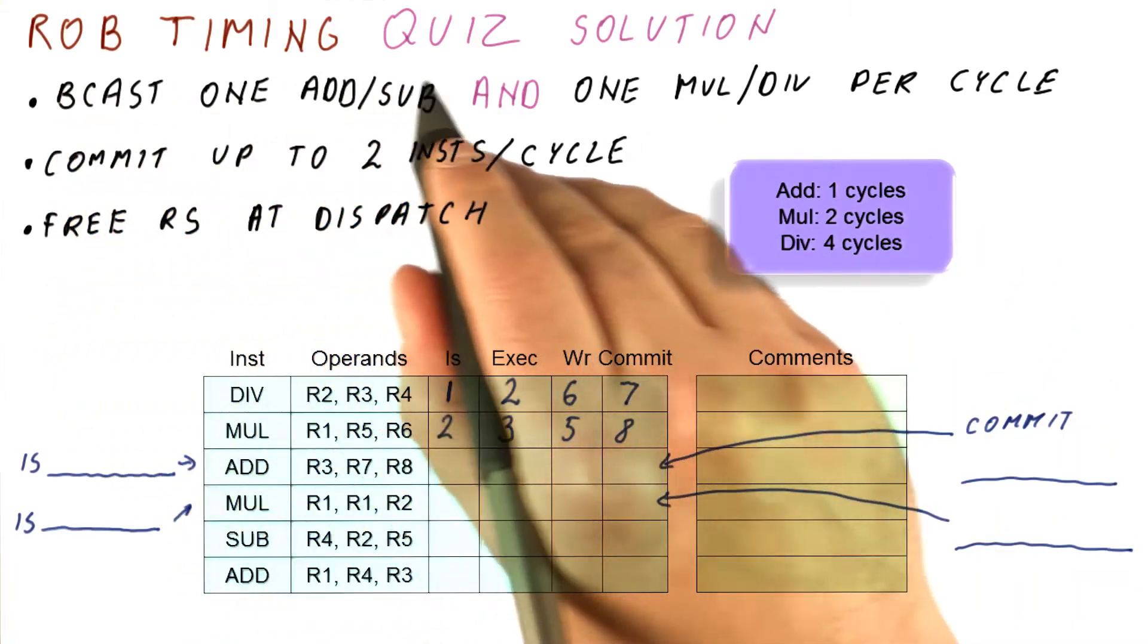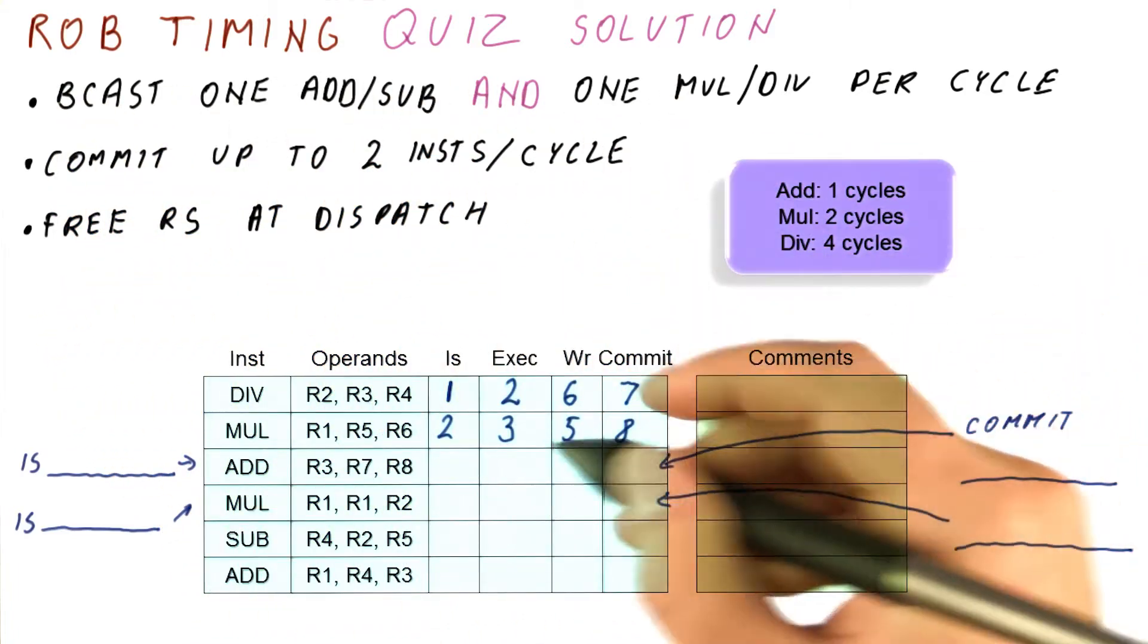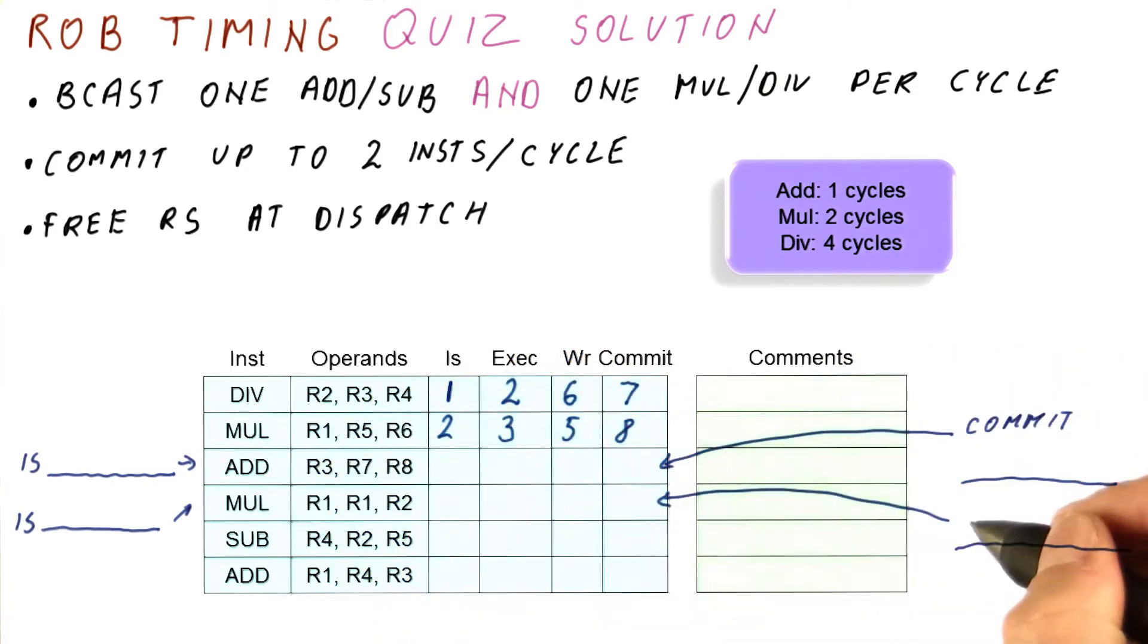Okay, let's work on the solution for our ROB timing quiz this time. So the question is, when does the add and multiply issue and when do they commit?